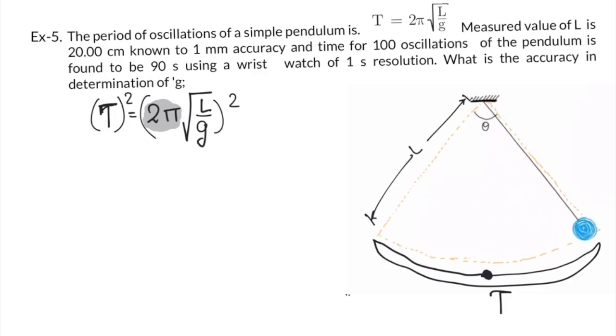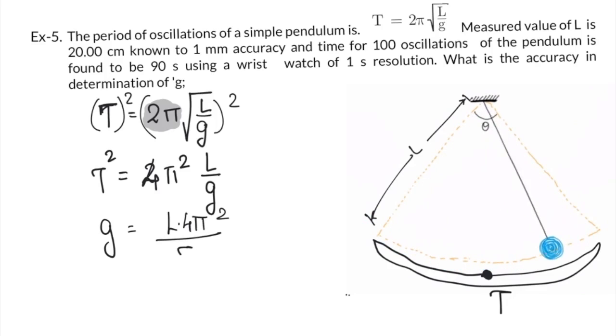By taking square, it will be 4 pi square. We will take G out of root; it is L by G. And making G as the subject, G equals L times 4 pi square upon T square.